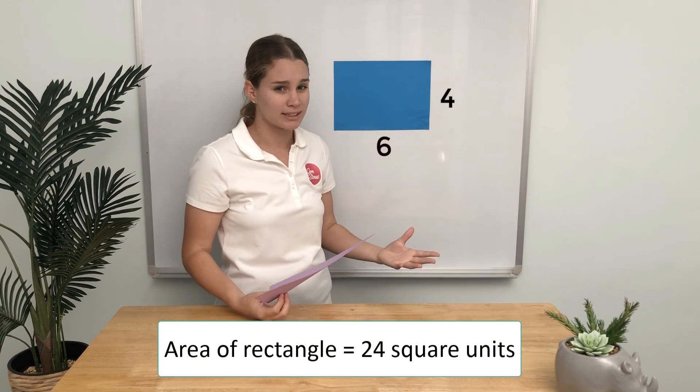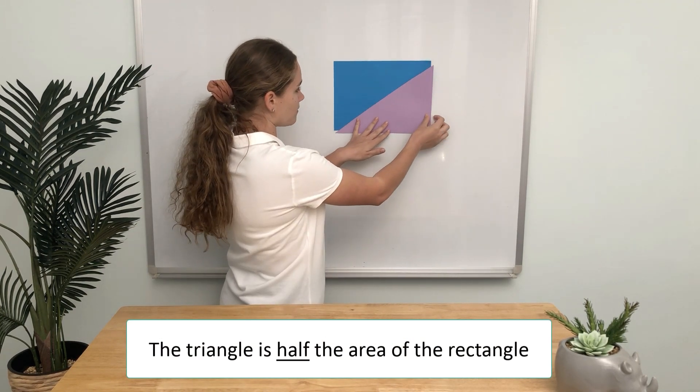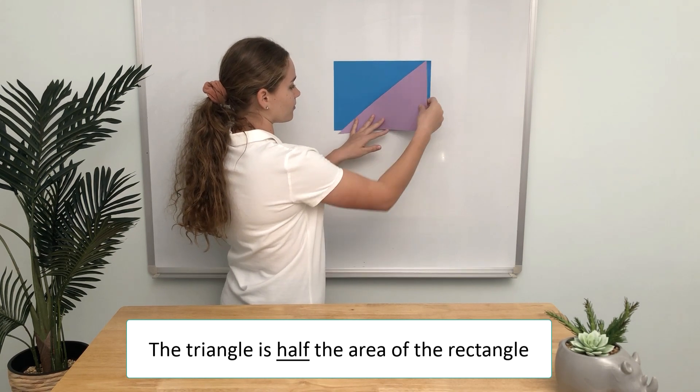To find the area of a triangle, it's the base times height divided by 2. Let's have a go at another one.